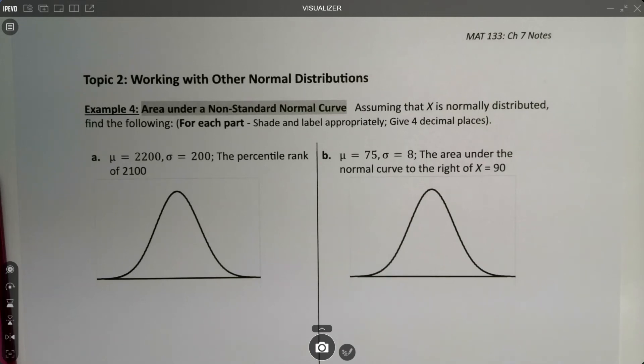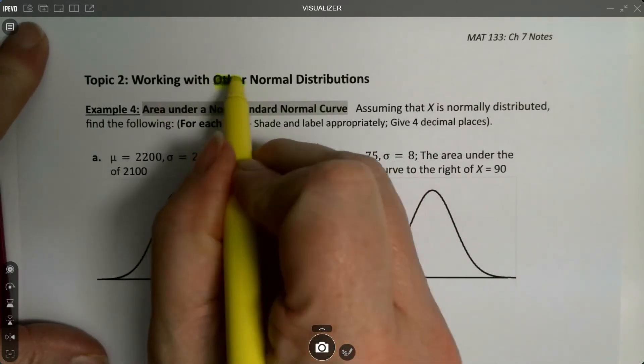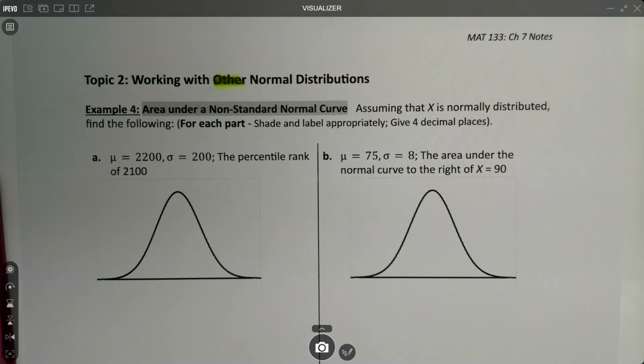So now that we know really well how to work with the z-distribution, the time has come to work with other distributions, other normal distributions. We're going to work with distributions that don't have 0 and 1 as their mean and standard deviation. It doesn't actually really change the difficulty that much. It just makes things slightly more tricky.